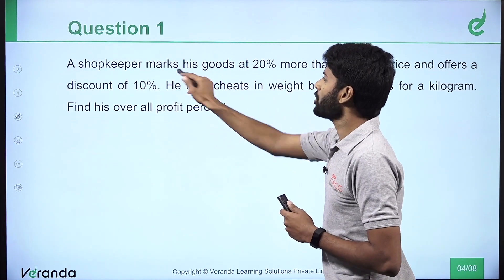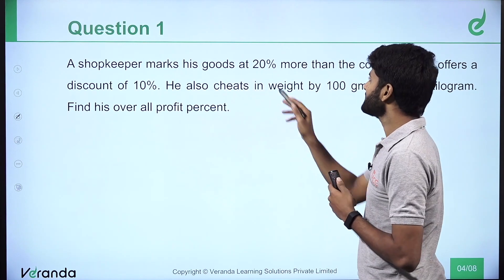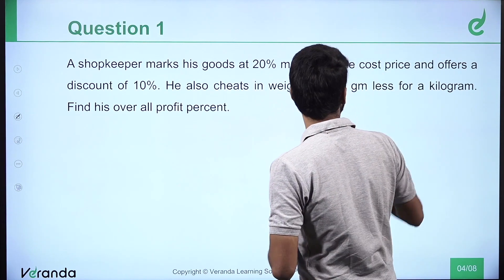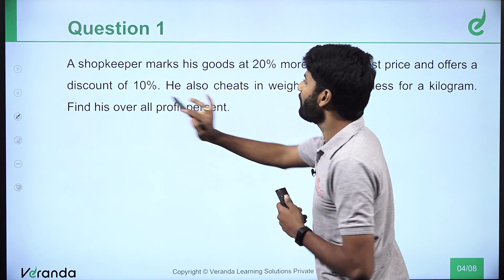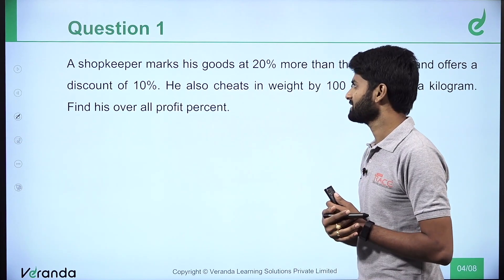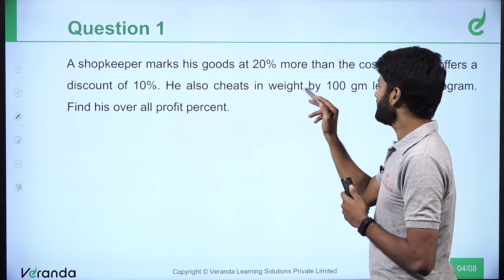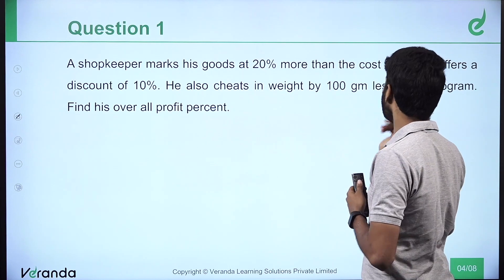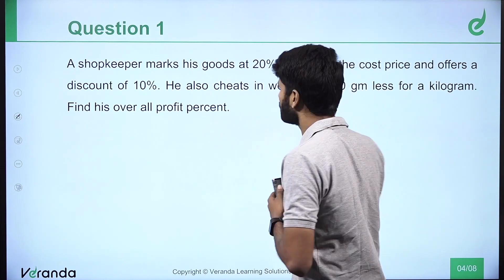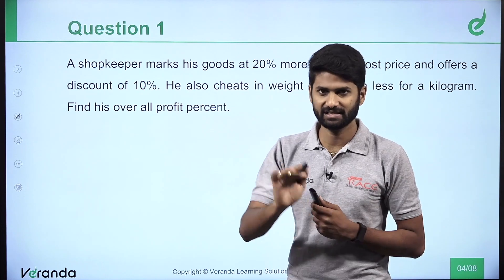A shopkeeper marks his goods at 20% more than the cost price and offers a discount of 10%. He also cheats in weight by 100 grams less per kilogram. Find his overall profit percentage.